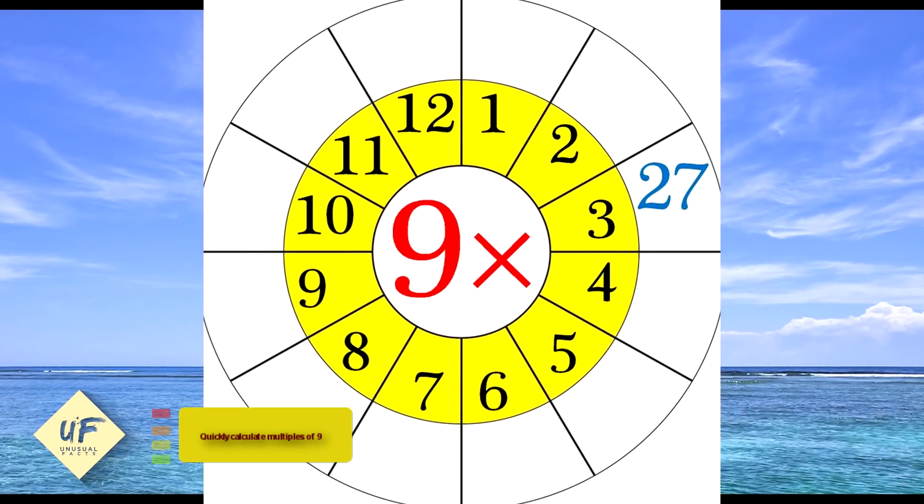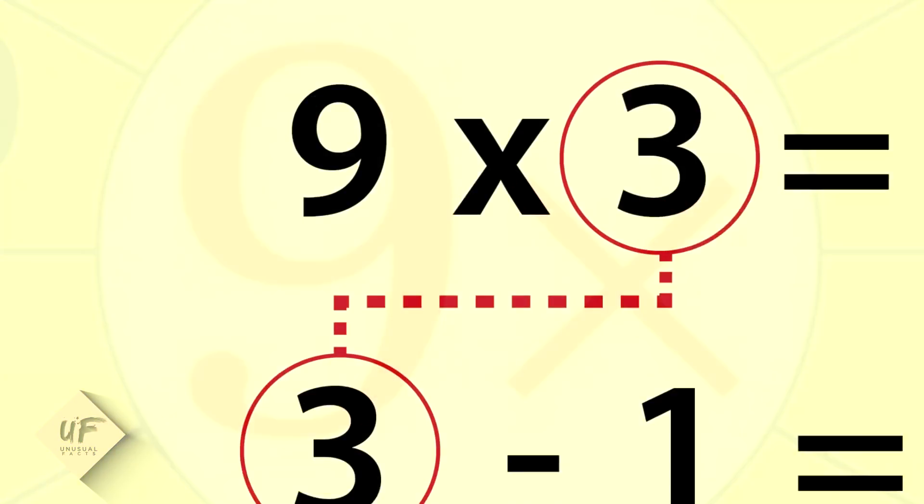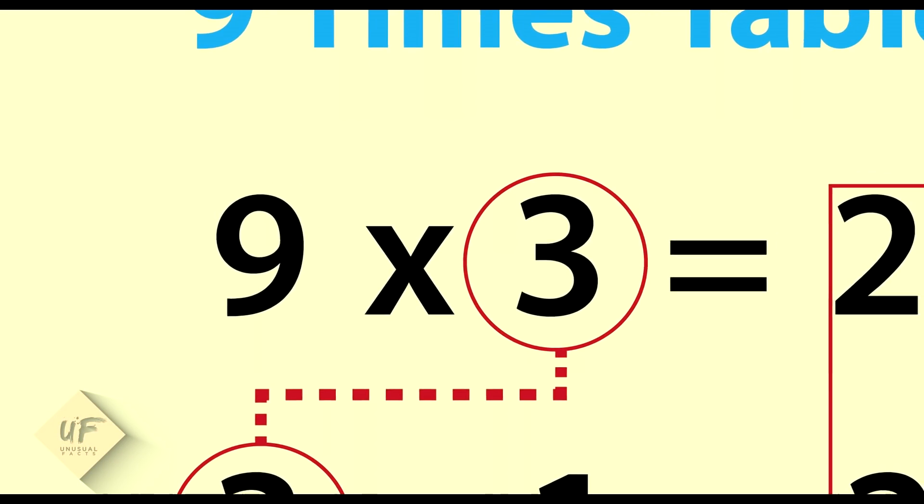Number two: Quickly calculate multiples of 9. To calculate the multiples of 9, you just need to remember that the tens increase and the units decrease, and the sum of the total always equals 9.